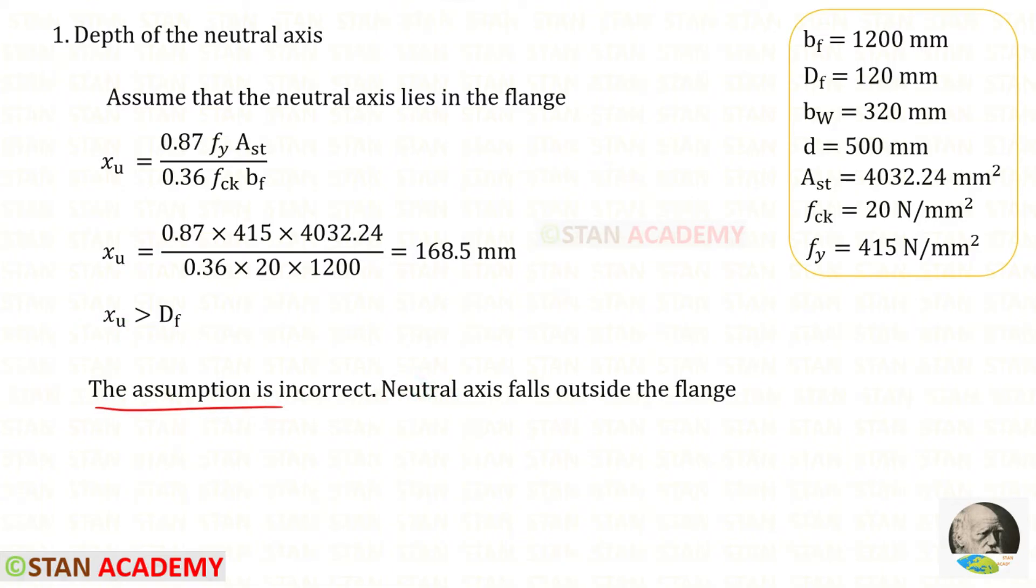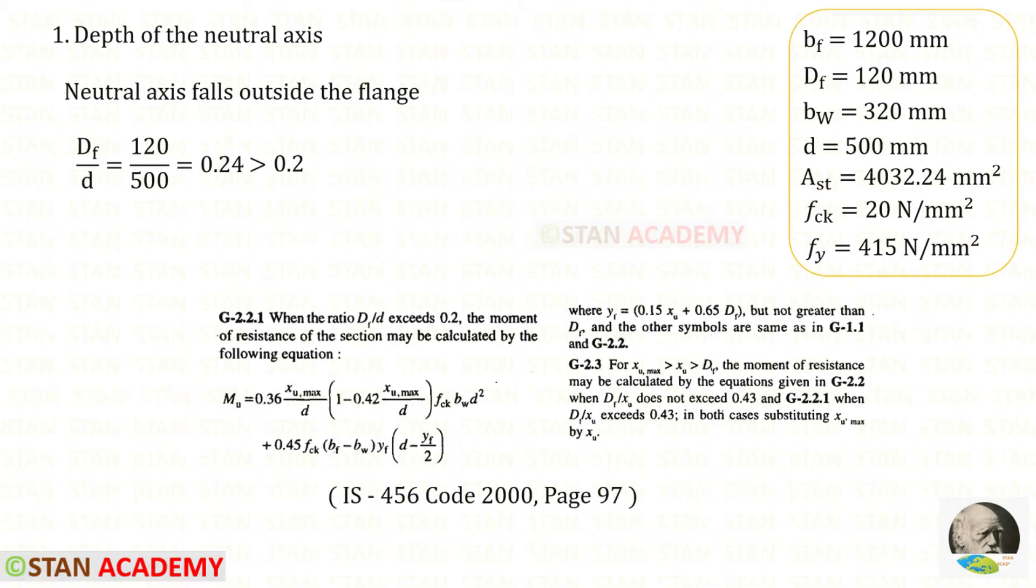The neutral axis lies outside the flange. We need to find whether DF upon D exceeds 0.2. For DF upon D we will get 0.24. So DF upon D exceeds 0.2. In this case to find the moment of resistance we need to use this equation. But we need to also follow the clause G 2.3.